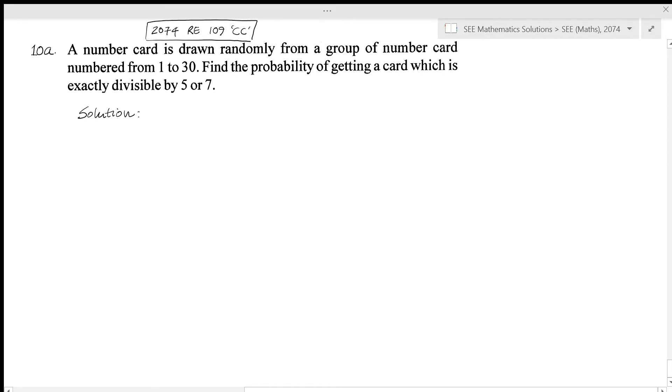So any of these work. Let's write it down. These kind of probability problems are very similar to what we do in sets. Here we know that from 1 to 30, the numbers that are divisible by 5...